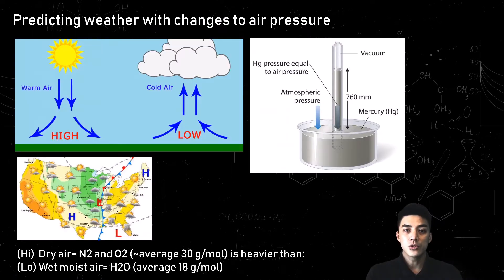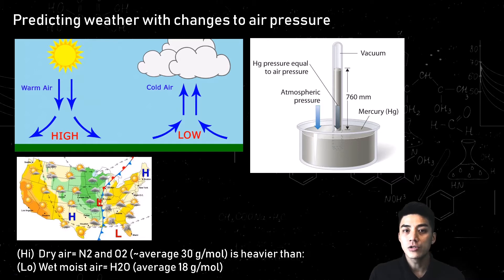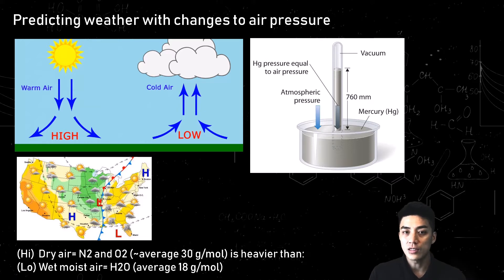You can predict the weather by observing changes to the air pressure. In high pressure zones, where the air is dry and there's more nitrogen and oxygen which makes it heavier, you can expect clear skies. In low pressure zones, where the air is lighter now that it has moisture content and water, you can expect to see rain on the forefront.